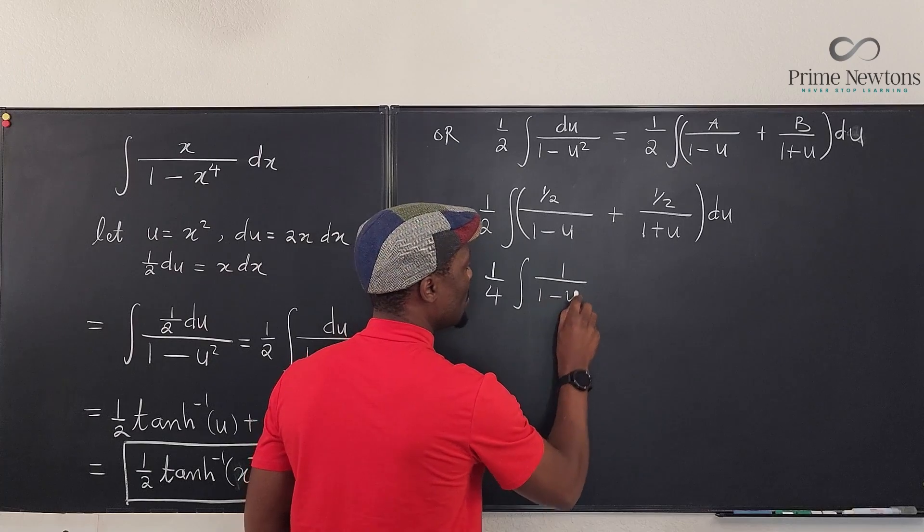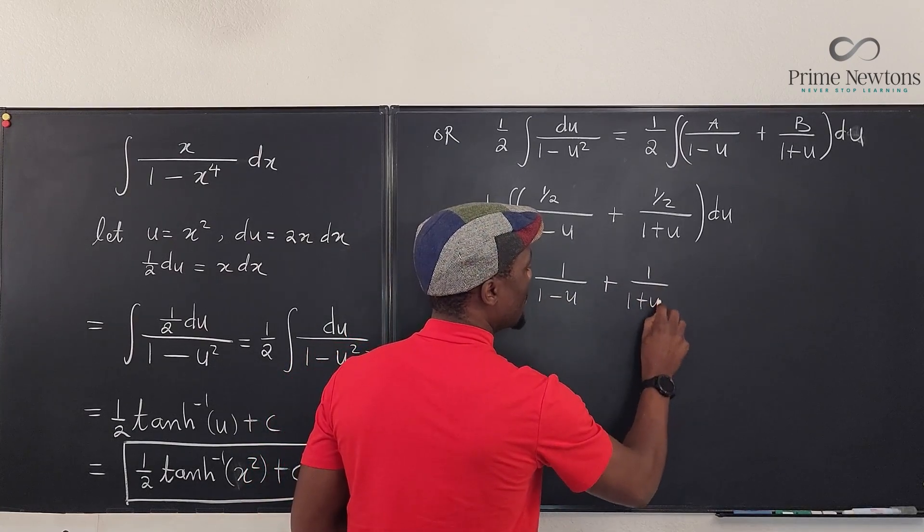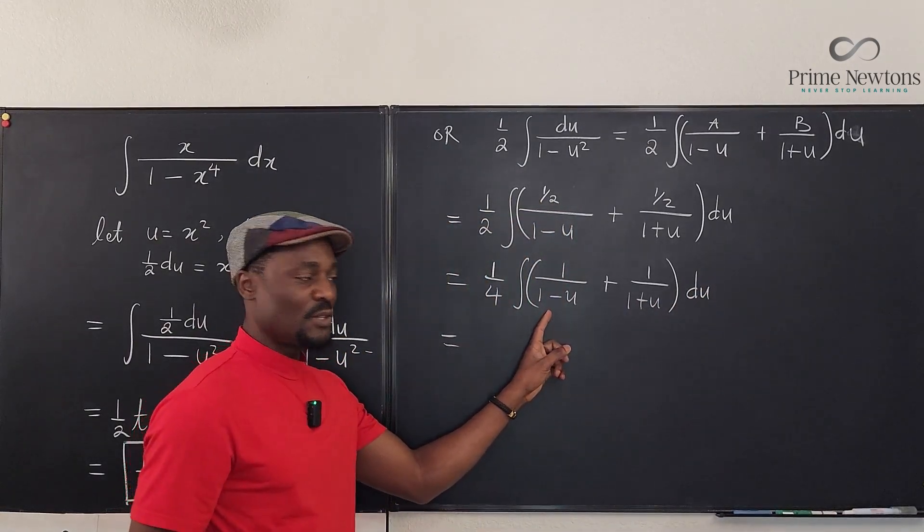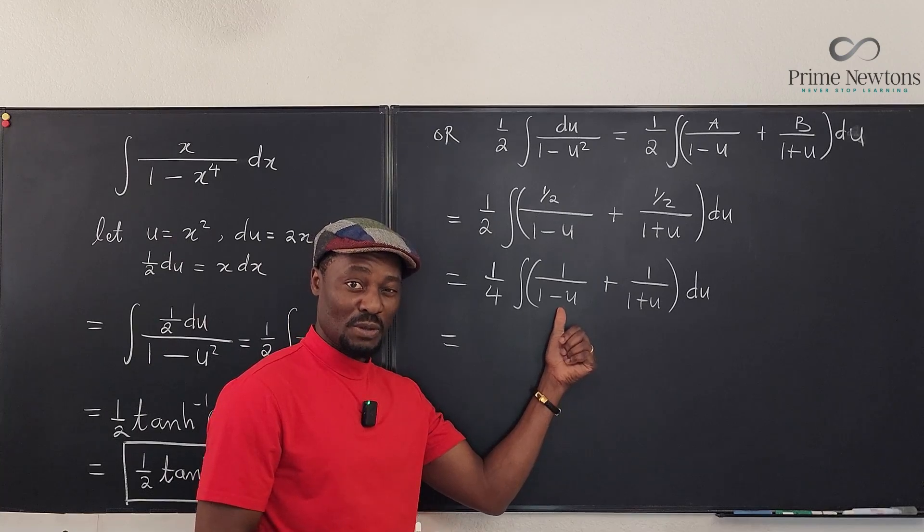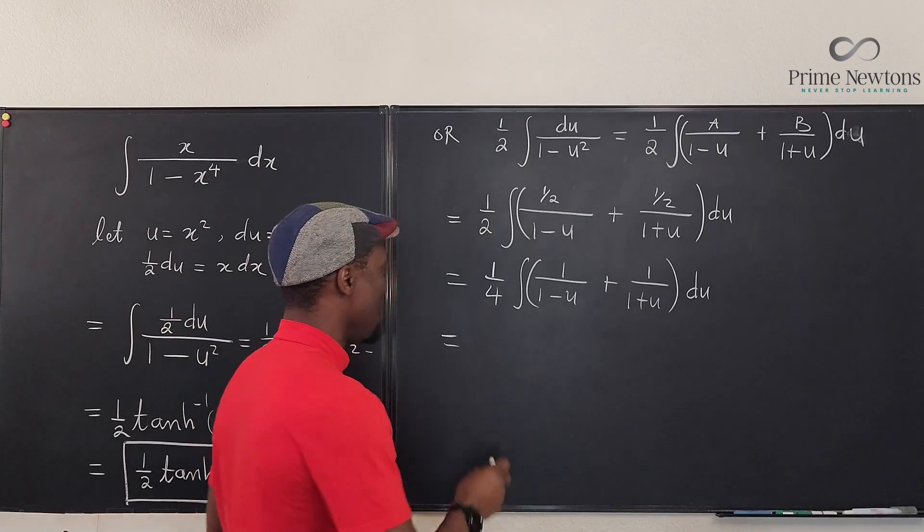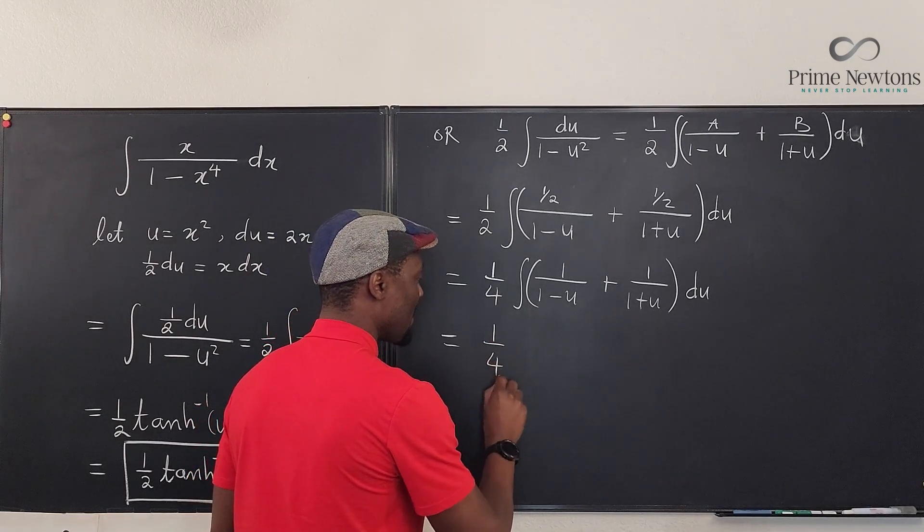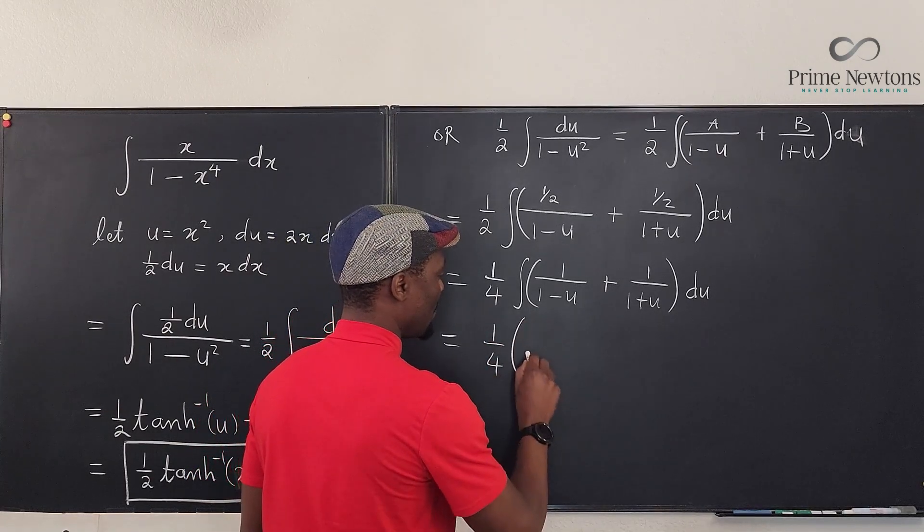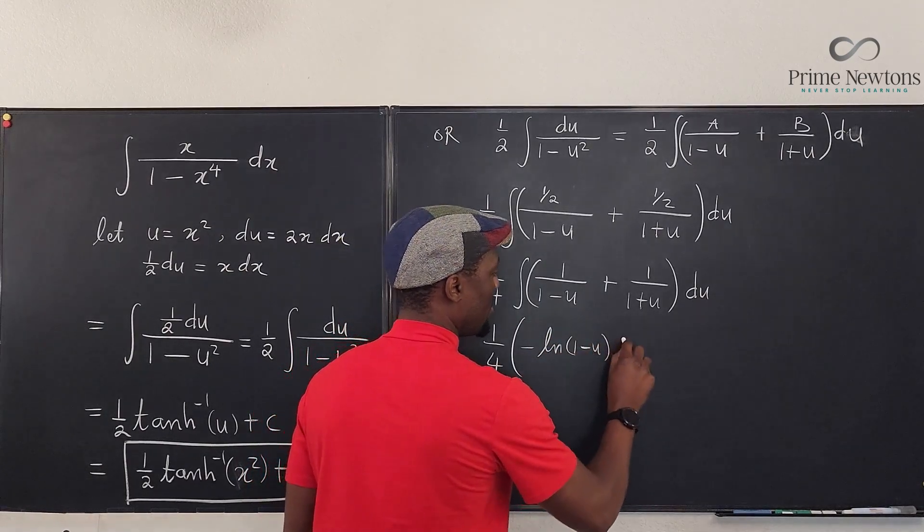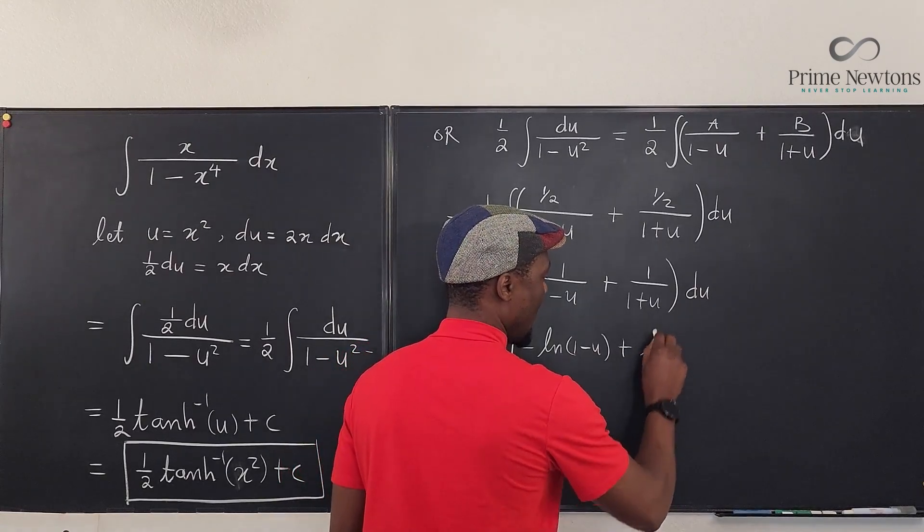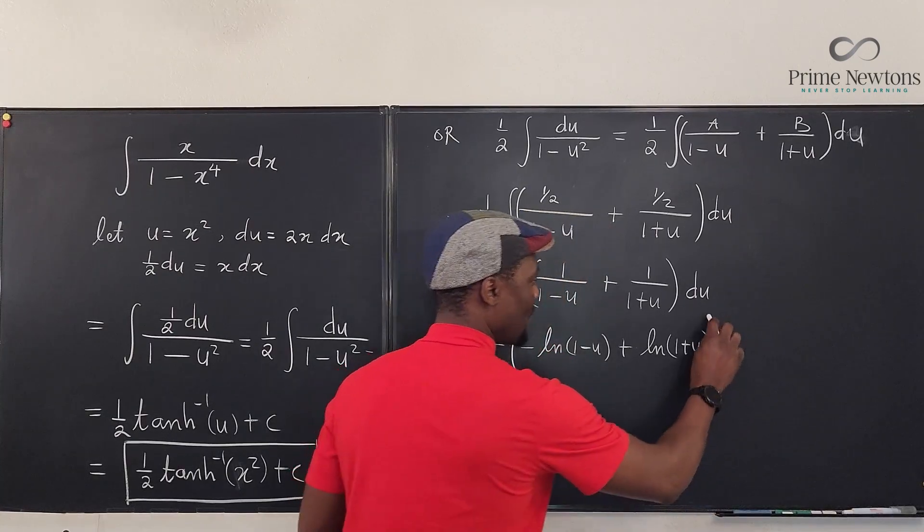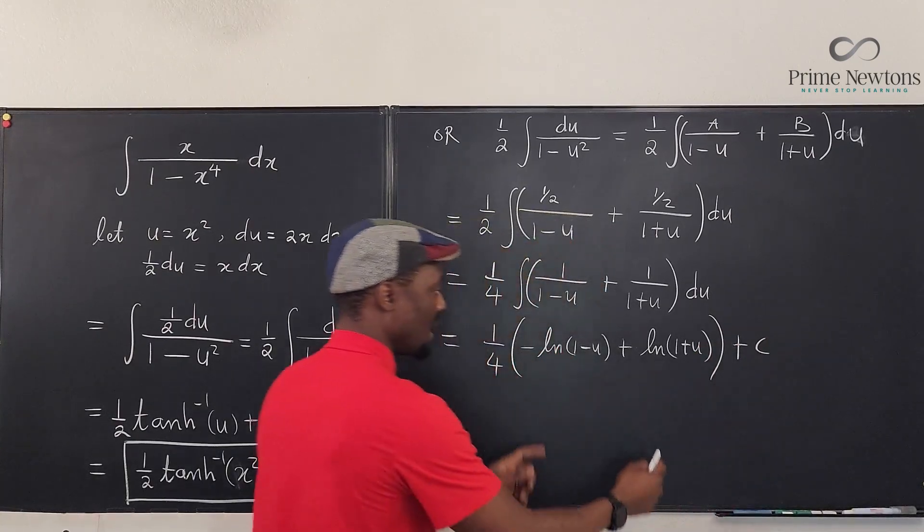And we know that when you integrate 1 - u, because of this if you do a u-substitution or a t-substitution now you're going to have a negative coming out of this integral. So it's ¼ times we're going to write negative natural log of 1 - u plus this is going to be natural log of 1 + u and basically we have our plus C.